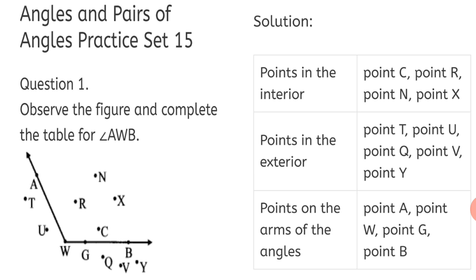Question 1: Observe the figure and complete the table for Angle AWB. What is asked? Points in the interior, points in the exterior, and points on the arms of the angles. For points in the interior — quite simple — we can see Point C, Point R, Point N, Point X, which lie inside the arms of the angles WA and WB. So they are said to be interior points.